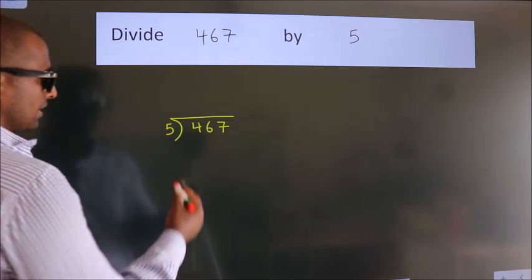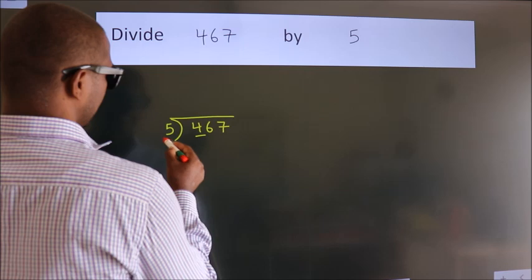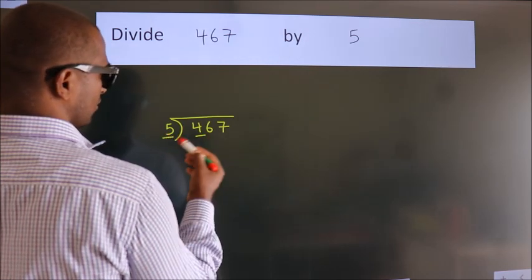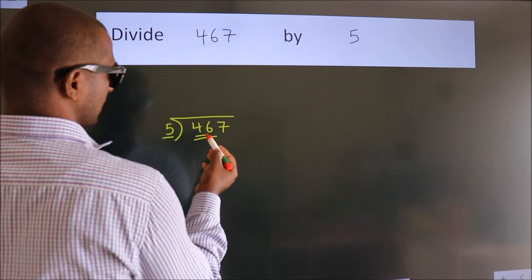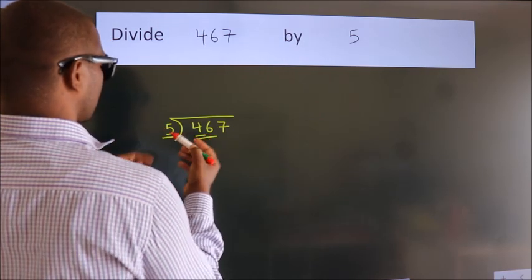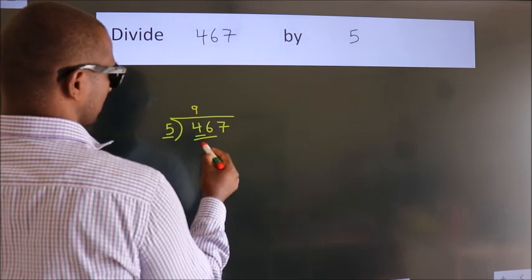Next, here we have 4, here 5. 4 is smaller than 5, so we should take 2 numbers: 46. A number close to 46 in the 5 table is 5 nines, 45.